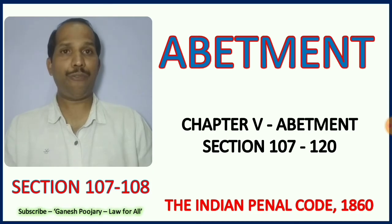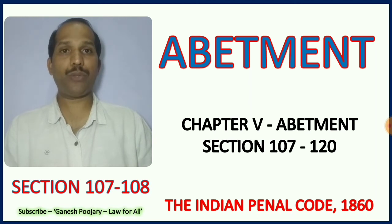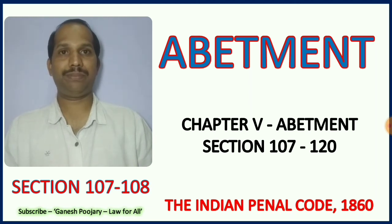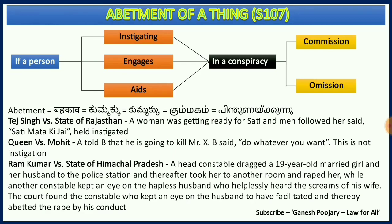Let us look at a chart which clearly gives the meaning of abetment. Section 107, the first section of Chapter 5, defines what is abetment of a thing. Now, it doesn't say abetment as an offense — it discusses abetment of a thing.